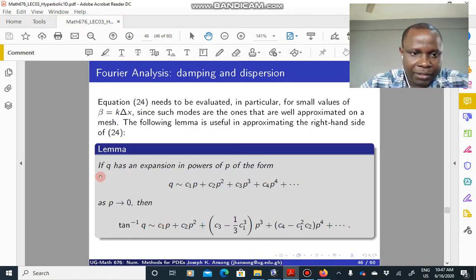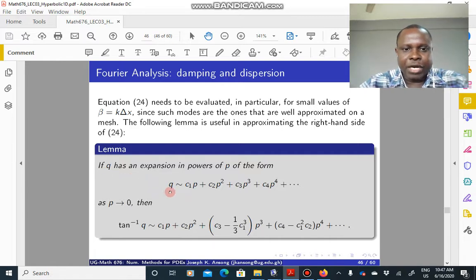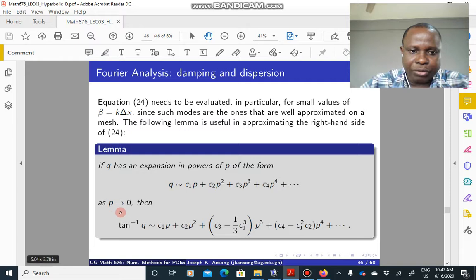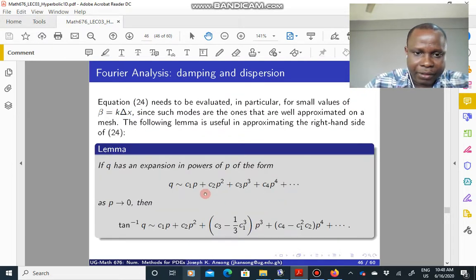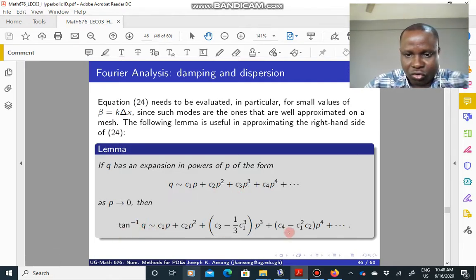So this lemma says that if q is an expansion in powers of p of the form this, where p is small, then the tan inverse of q is expanded and is given by this expression. So basically if we can expand what is in brackets in equation 24 to take this form, then we can compare this to that expansion and see that the tan inverse of whatever is in brackets is equal to something like this.